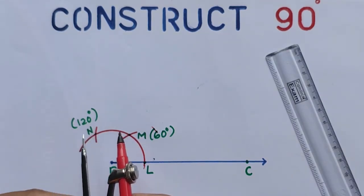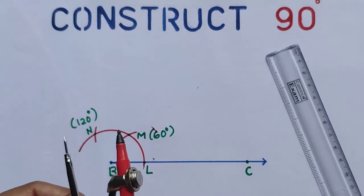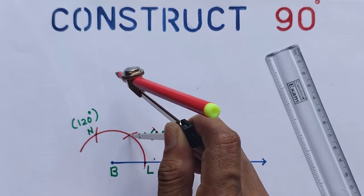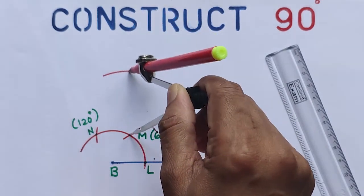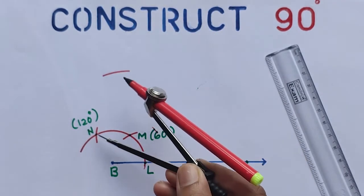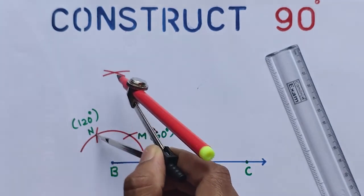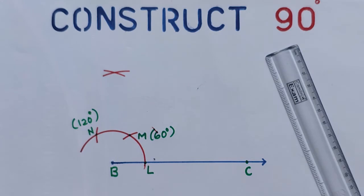For that, if you want you can change the compass measure. Place the metal tip on M, draw an arc, and without changing the compass, place the metal tip on N, draw one more arc. It intersects at A.